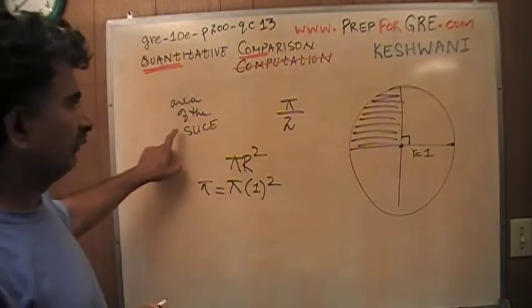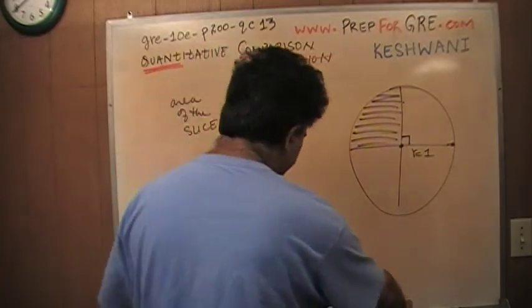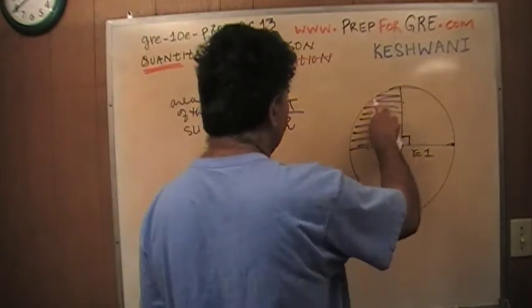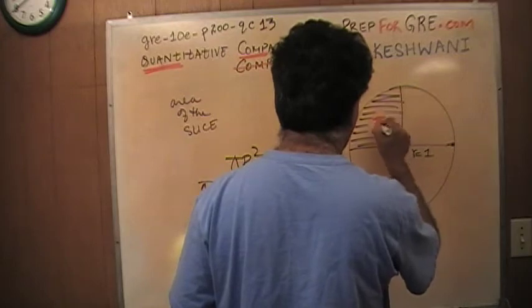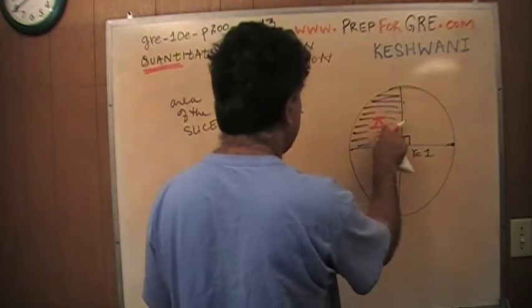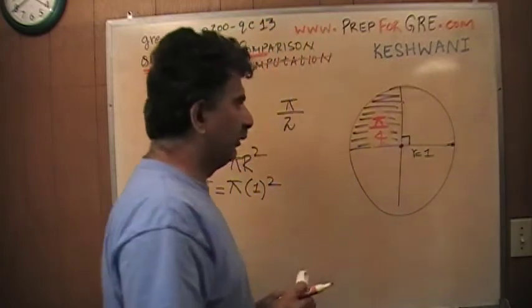And therefore, the area of the slice, a quarter of the circle there, the area of the slice which is a quarter of the circle, has to equal π over 4.